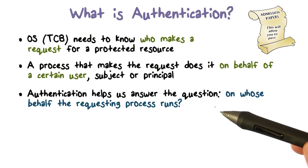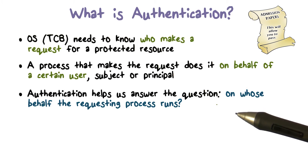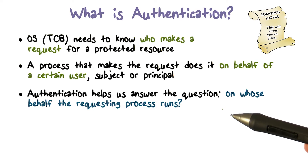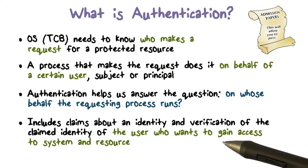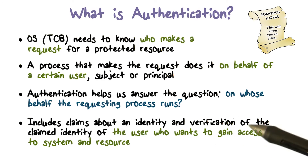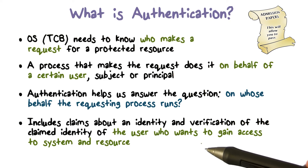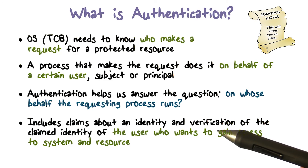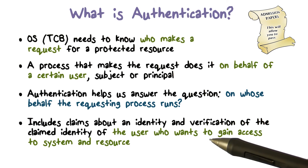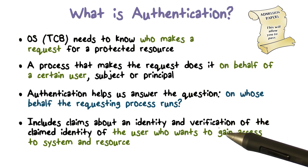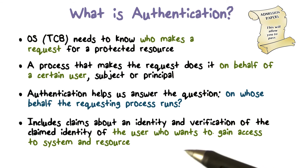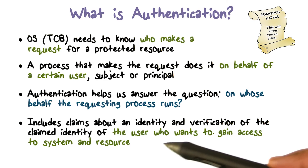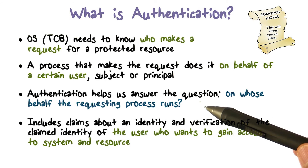The requesting process makes the request by making a system call — it comes to the operating system, but on whose behalf is it making that call? To establish the user on whose behalf the process is running, we have to start with authentication. In the beginning, when a user comes to the system, the user authenticates himself or herself. That is how we start a login session — you log into the system and start a session that launches one or more processes, and then the session ends.